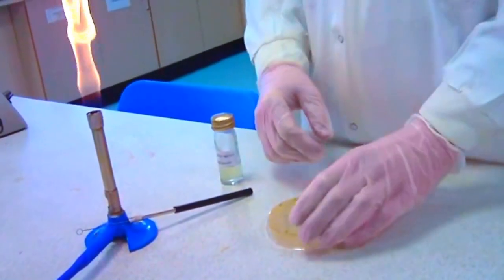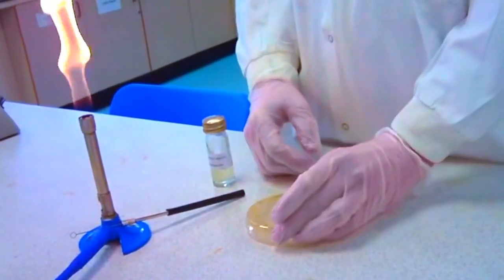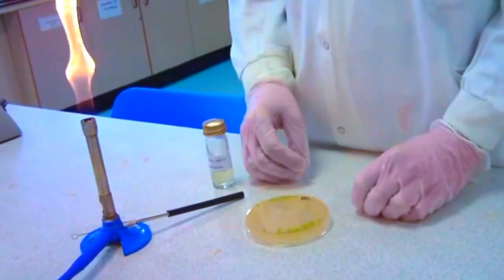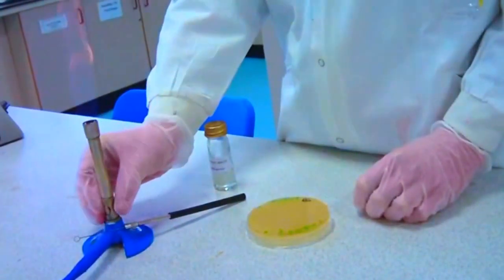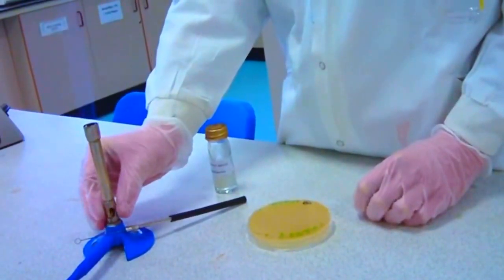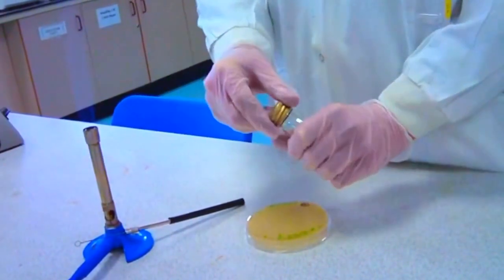Place inverted plate close to the Bunsen burner to reduce chances of contamination. Turn on the Bunsen burner. Loosen the cap of the bottle containing the inoculum.